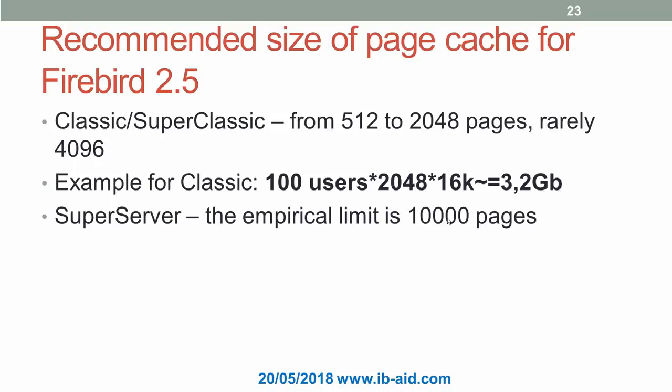Firebird 2.5 SuperServer should have 10,000 pages. These recommendations are based on multiple tests performed by IBSurgeon, such as 1.7 TB database performance tests, and on experience with many production databases. As you can see, Firebird 2.5 is not eager to consume a lot of memory — 100 users in Classic will consume only 3.2 GB in case of 16 KB page size.